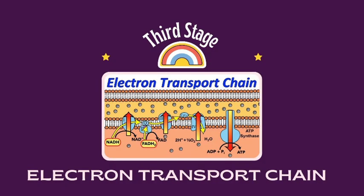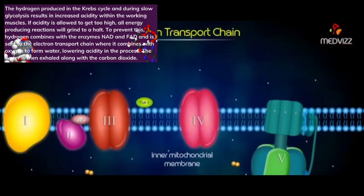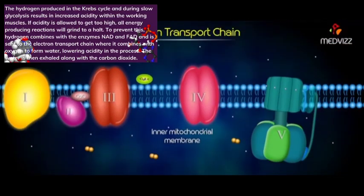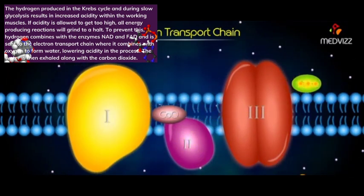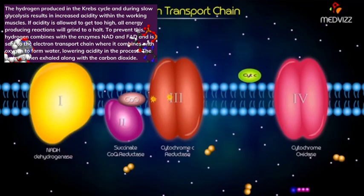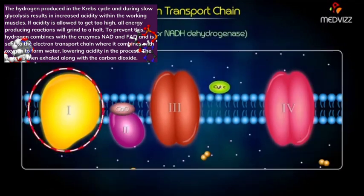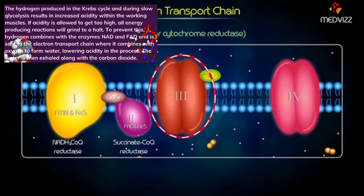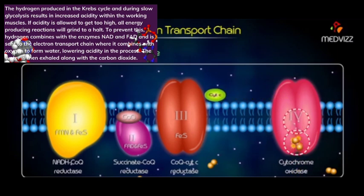The last stage is the electron transport chain. The hydrogen produced in the Krebs cycle and during slow glycolysis results in increased acidity within the working muscles. If acidity is allowed to get too high, all energy reactions will grind to a halt. To prevent this, hydrogen combines with the enzymes NAD and FAD and is sent to the electron transport chain, where it combines with oxygen to form water, lowering acidity in the process. The water is then exhaled along with the carbon dioxide.